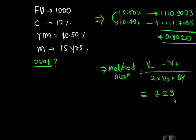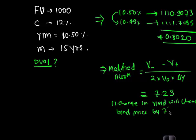7.23. 7.23 is the modified duration. What is the interpretation? 1% change in yield will change bond price by 7.23%. 1% change in the yield will change bond price by 7.23%.